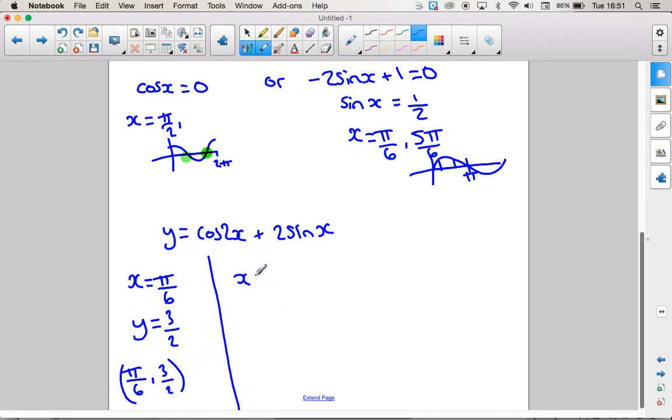Next one is when x is pi over 2. This one will give me the y is going to be cos of 2 pi over 2 or cos of pi, plus 2 sine of pi over 2, which comes out at 1.